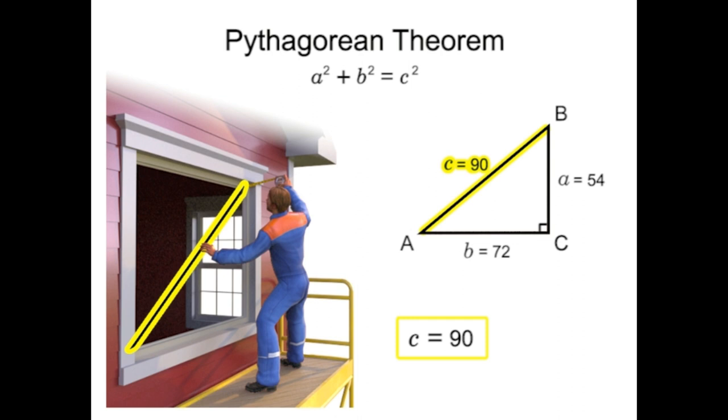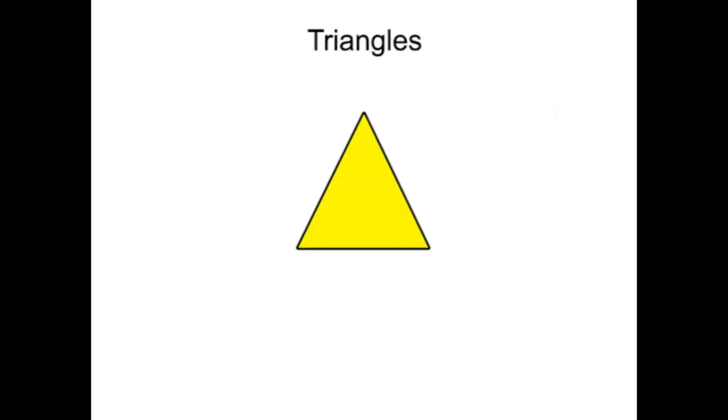In addition to the Pythagorean Theorem, triangles have several more unique characteristics that are useful in everyday math. For instance, the three angles of the triangle will always add to be 180 degrees. So, if two of the angles are known, it's easy to calculate the third angle.